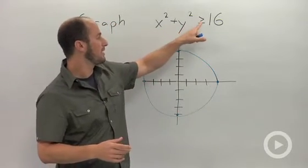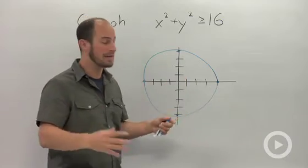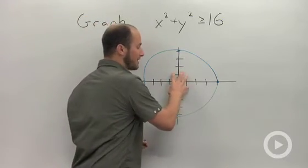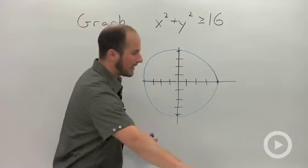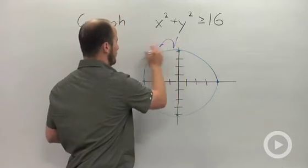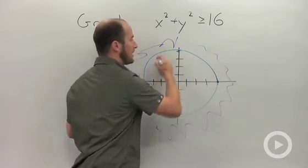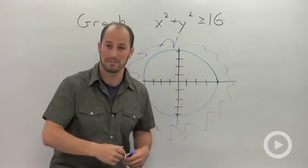0 plus 0 is greater than or equal to 16. That's a false statement. So I know then everything inside this circle isn't going to make this true, which leaves everything on the outside to satisfy this inequality.